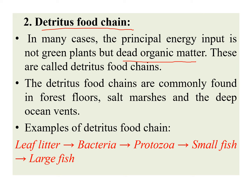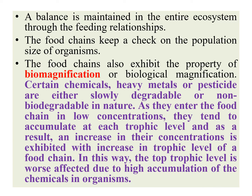Some examples: leaf litter being decomposed by bacteria. Bacteria are in turn eaten by protozoa. Protozoa could be eaten by small fish, and small fish can again be eaten by a large fish. So this is an example of a detritus food chain.